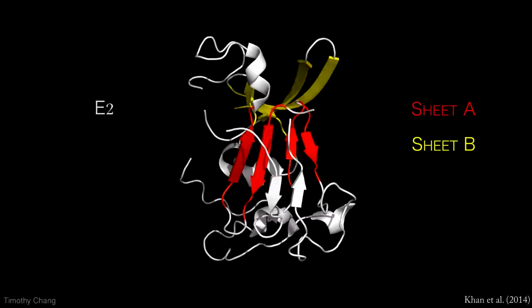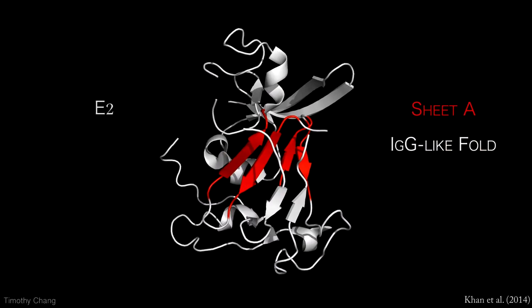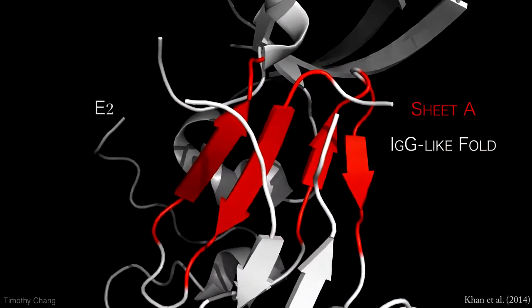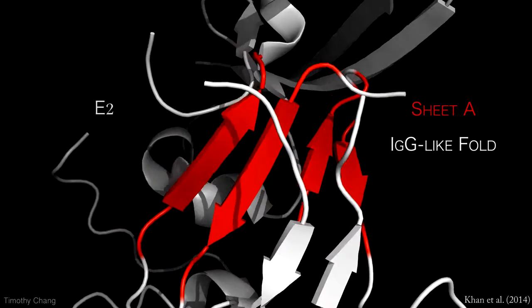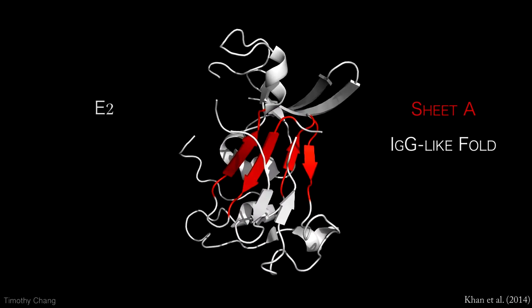It creates two perpendicular beta sheets, A and B. Sheet A has an IgG-like fold, which is also present in other class 2 membrane fusion proteins. With this discovery, focus has shifted to this protein as the predicted membrane fusion protein for HCV.